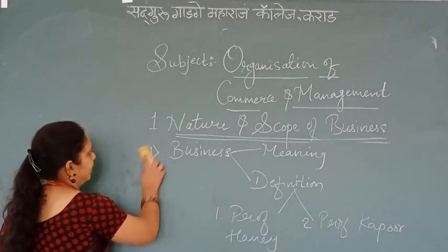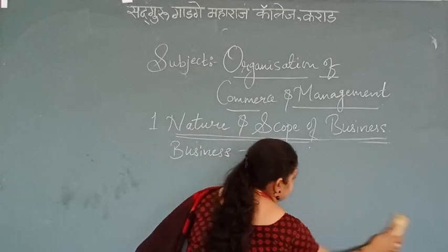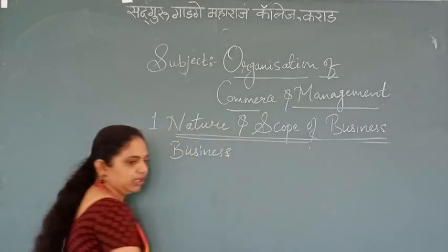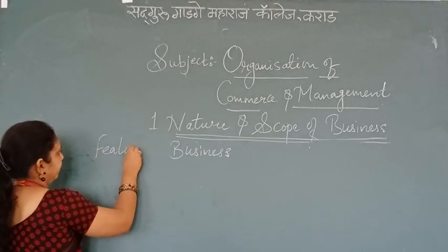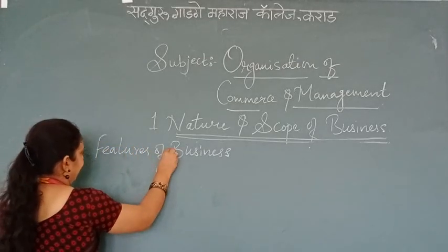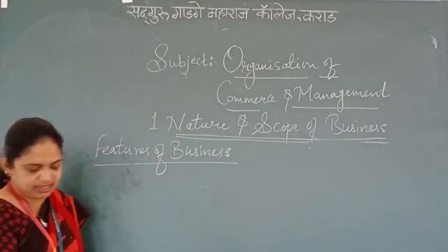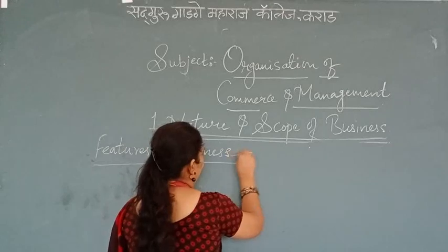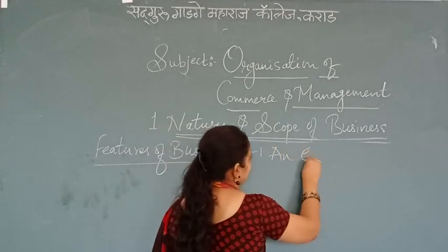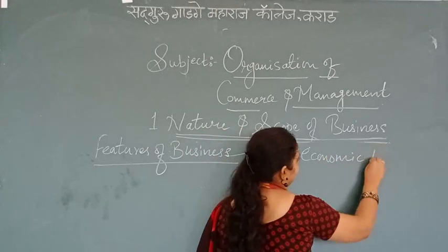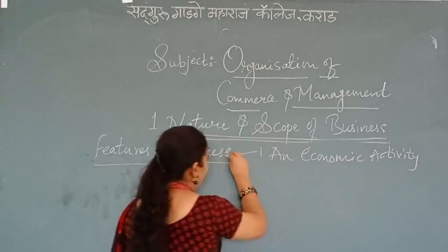Now we will move on to the features of business. Features of business are divided into 10 points, and we will see them one by one. The first feature is that it is an economic activity, and the second is that there are always two parties.